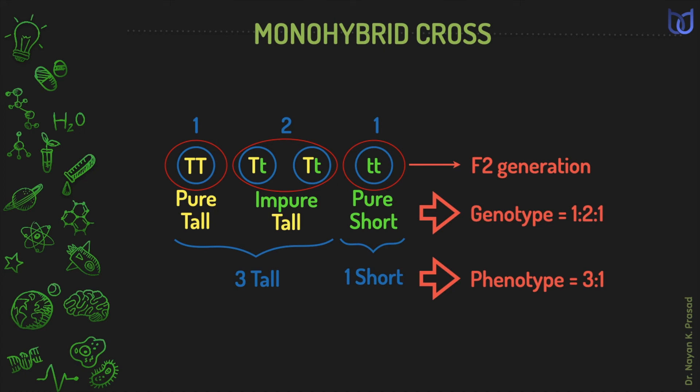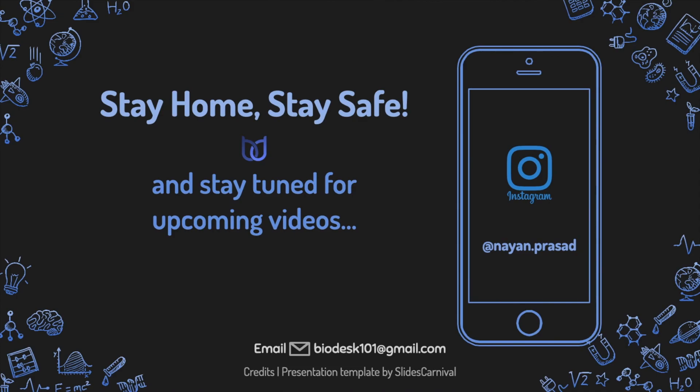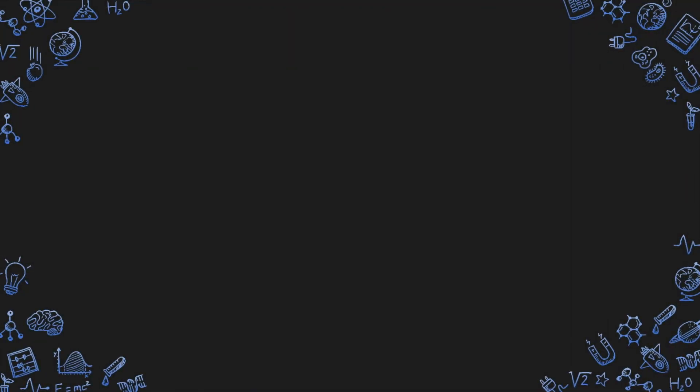Thus, Mendel explained the monohybrid cross on the basis of factors which are now called genes. That was all about the monohybrid cross. In our next session, we shall discuss the dihybrid cross performed by Mendel. Hope this video was helpful. Do like and share this video and subscribe to our channel. See you in the next one. Thank you.